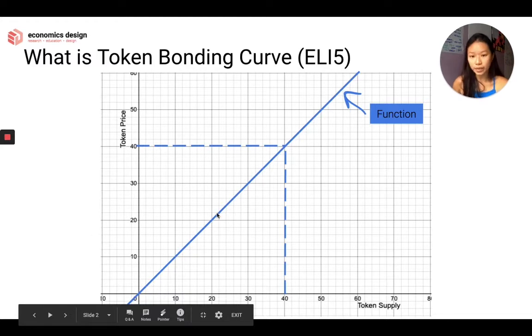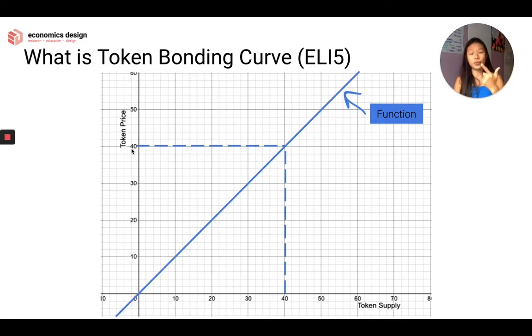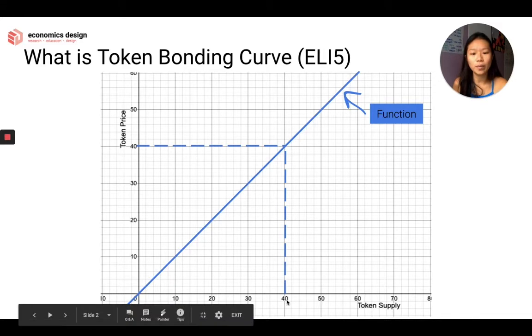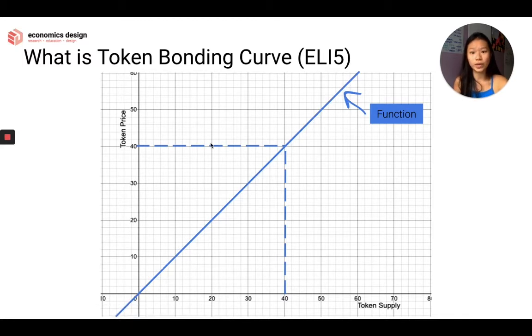And that's just the 40th token, right? If I want to buy two tokens, so token 40 and token 41, I can't just say that token 40 is 40 bucks, so I'm just going to do 40 times two because I've got token 40 and token 41. No, because when you buy token 40, now the supply increases, so the price of token 41 will be higher than token 40.